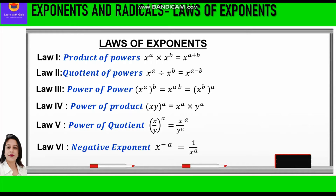The sixth law is Negative Exponent: x raised to power minus a is equal to 1 upon x raised to power a. Whenever we have a negative exponent and we want to convert it into positive, we just reciprocate the base. The base was x, so we took it from the numerator and put it in the denominator, writing 1 upon x raised to power a.